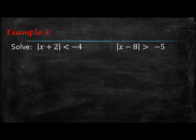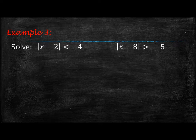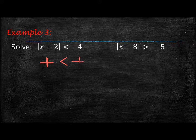These next two examples present an interesting situation. The first one: the absolute value of x plus 2 is less than negative 4. Think about that — anytime you take the absolute value of something, you're going to get a positive number. So we have a positive number on the left side, and it's asking when is that going to be less than negative 4.